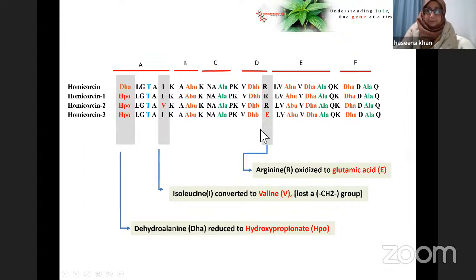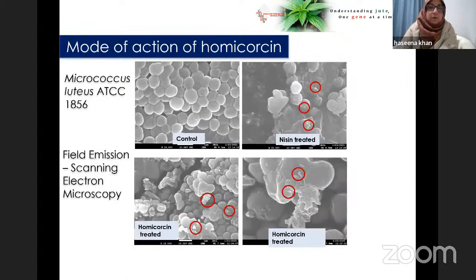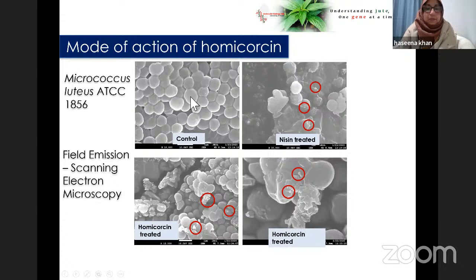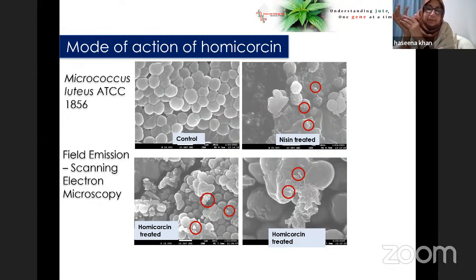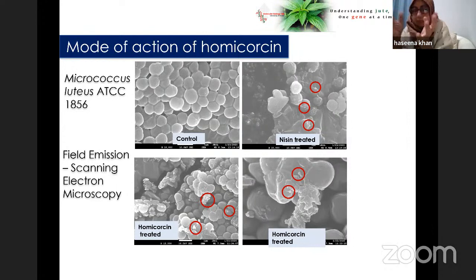We are still working to understand the variant differences. Using scanning electron microscopy, we found that homicorcin is bactericidal in nature — in susceptible cells such as Micrococcus luteus, it makes pores and causes loss of membrane integrity. This is how it works as an antibacterial agent. We are currently working on the heterologous expression of the homicorcin gene.